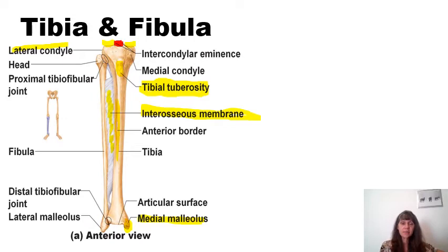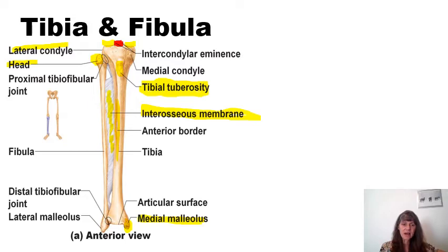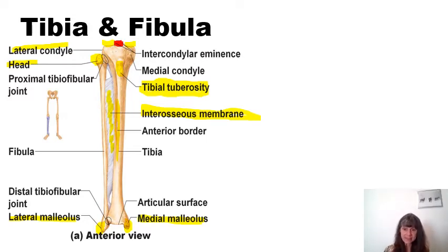Between the tibia and the fibula, the tibia is the bone that bears weight. The fibula is not a weight-bearing bone — it is there for balance. The fibula has a head at its proximal aspect. As you go down to the distal aspect of the fibula, you will see the lateral malleolus. The lateral malleolus sits lower on the distal aspect of the leg than does the medial malleolus. You can feel this as you go toward your ankle — the lateral malleolus extends further distally. Remember: the tibia bears weight; the fibula does not.